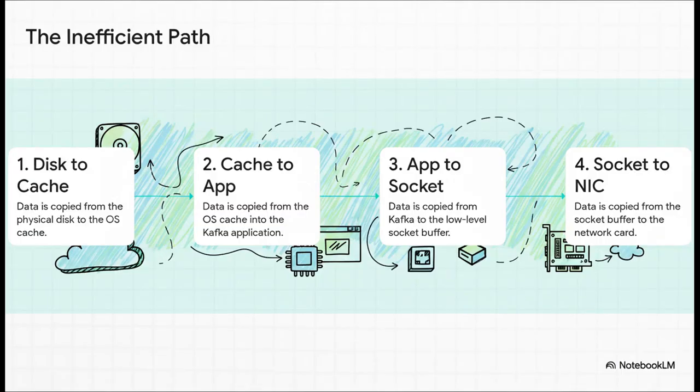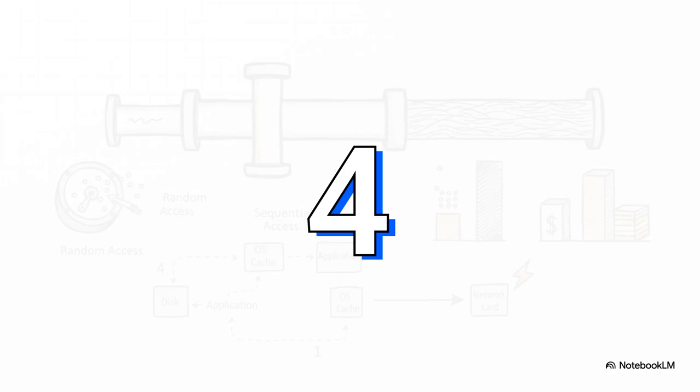Let's look at the old, inefficient way data usually moves through a system. First, the data gets copied from the disk into the operating system's memory cache. Then it's copied from there into the Kafka application's own memory. Then the application copies it again into something called a socket buffer, which is getting it ready for the network. And finally, it's copied one last time from that socket buffer to the network card. It's a lot. That's four separate copies of the same data, plus a bunch of back and forth between the operating system and the application.